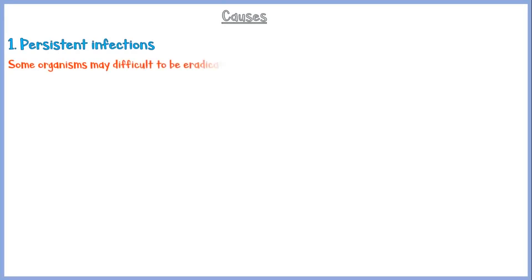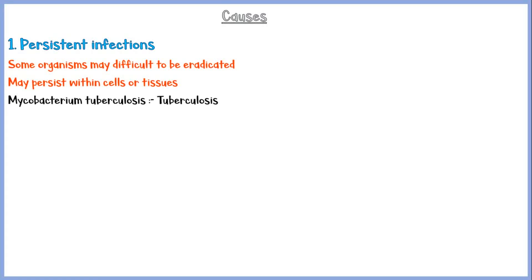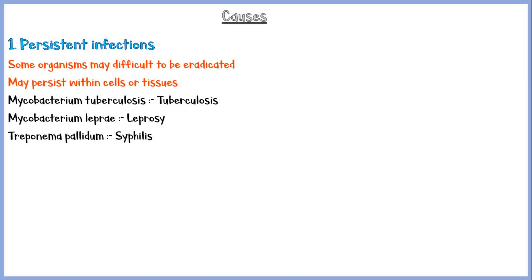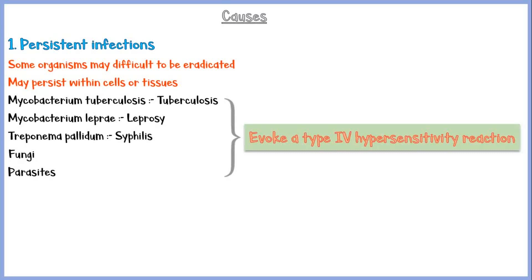First, let's discuss some causes of chronic inflammation. One is persistent infections. Some organisms may be difficult to eradicate from our body, and they may persist within cells or tissues for a longer period of time. Common organisms include Mycobacterium tuberculosis, which causes tuberculosis; Mycobacterium leprae, which causes leprosy; Treponema pallidum, which causes syphilis; some fungi; and some parasites. These organisms evoke a type 4 hypersensitivity reaction in the body, and the inflammatory mediators secreted during the reaction will sustain the inflammatory process for a long period of time.